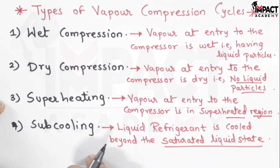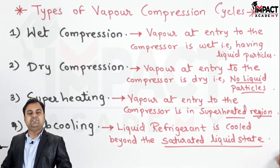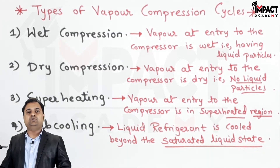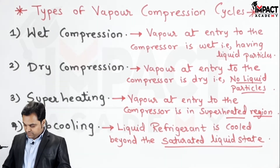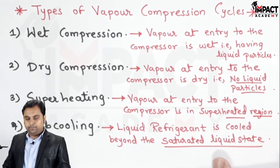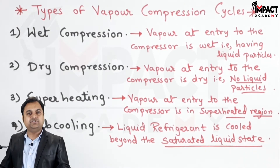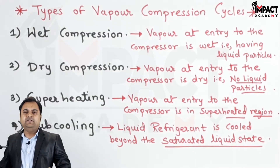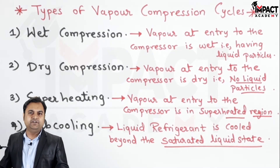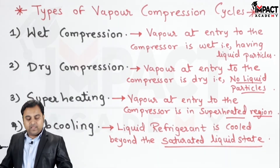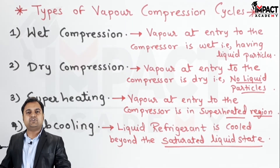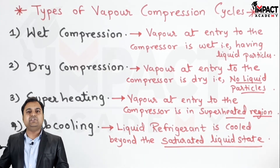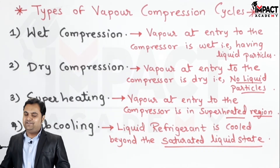In case of subcooling, the liquid refrigerant coming out from the condenser is cooled beyond the saturated liquid state — that is, it will go further away from the saturated liquid state. In the further videos we are going to see each of these processes in detail.